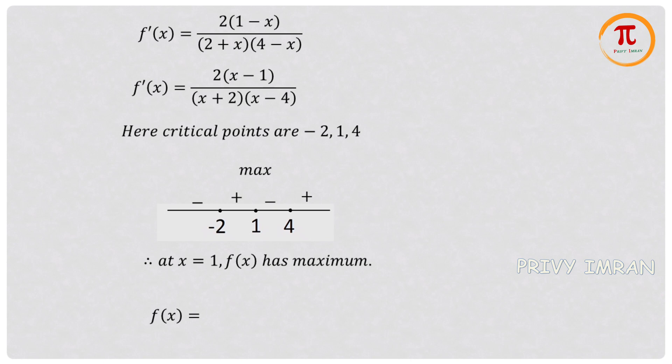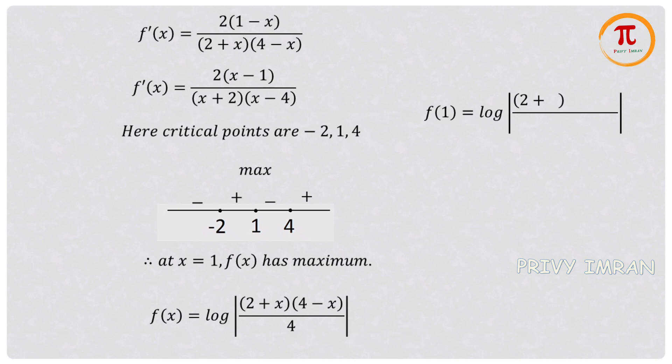Substituting x = 1 into the function f(x) = log[(2 + x)(4 - x)/4], f(1) = log[(3)(3)/4] = log(9/4). We conclude that at x = 1, f(x) has a maximum value of log(9/4).